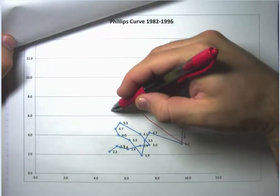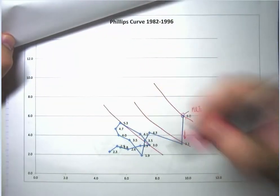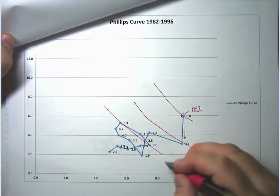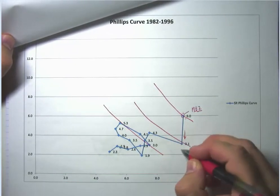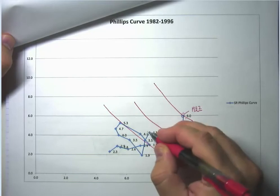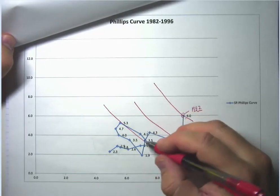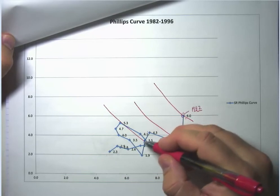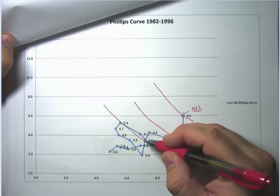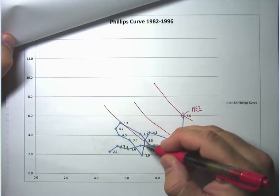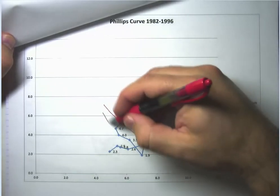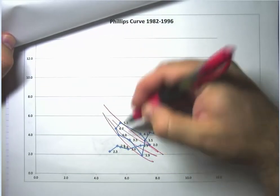And gradually, the Federal Reserve, people start to believe that it is a credible inflation fighter. And 1983, 84, 85, there's some good luck here. OPEC falls apart and so we get the benefits of a reverse oil shock and oil prices fall. And eventually, you can see we've got a Phillips curve in this region.